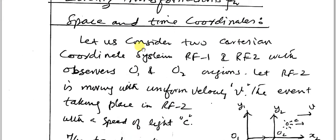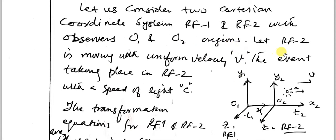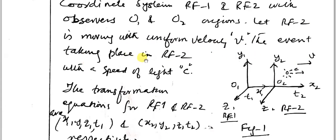Now let us consider two Cartesian coordinate systems Rf1 and Rf2 with observers O1 and O2 at the origins. Now let Rf2 be moving with uniform velocity v, with the event taking place in Rf2 with the speed of light c in the second frame.